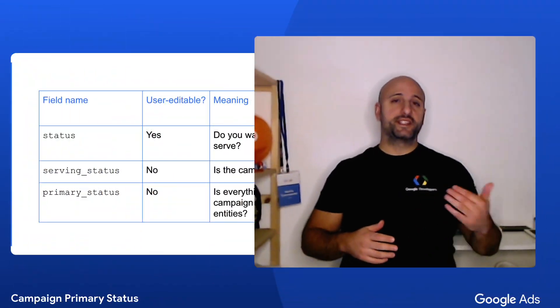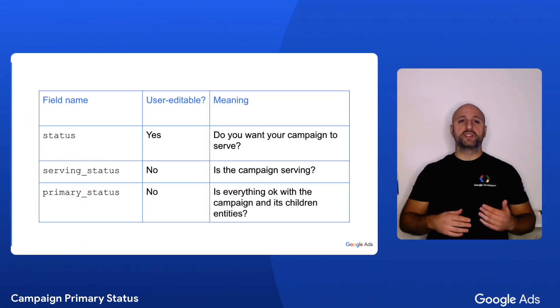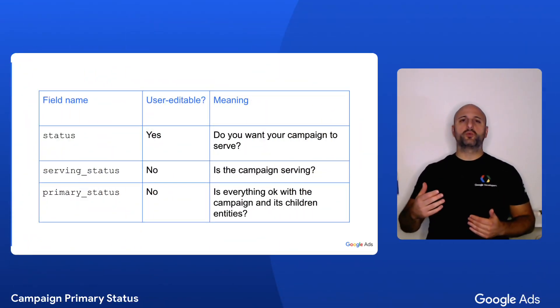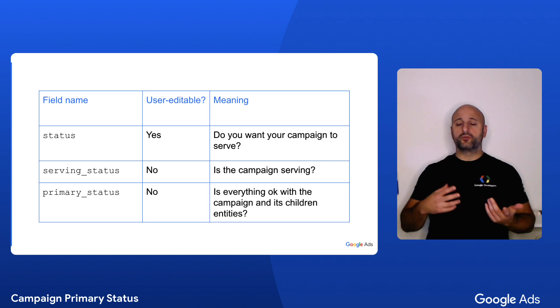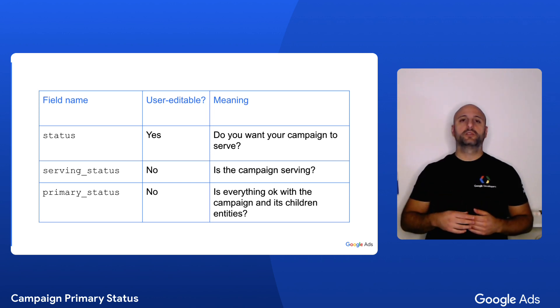A campaign's primary status is a read-only field, meaning that you cannot change its value with a mutate request. This sets it apart from the status field, which is the one you change when you want to pause a campaign or to remove it.